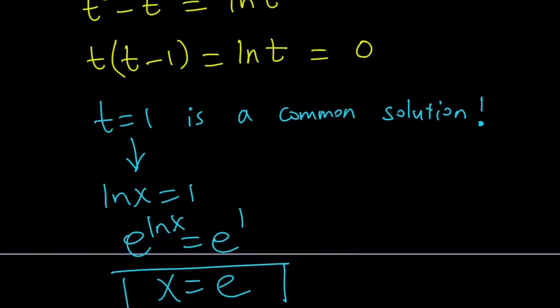And if you go back to the original problem, plug in e. e to the ln e is e to the 1, which is e. e ln e is e times 1, which is e. So, we have an agreement on the e's. That's good. So, x equals e works.